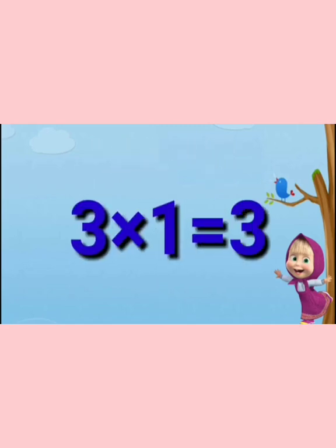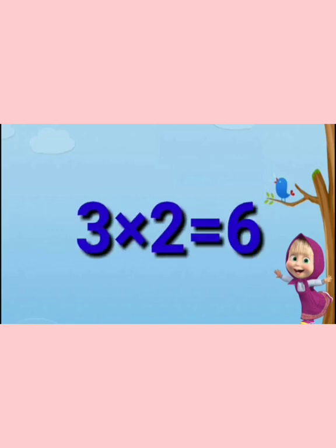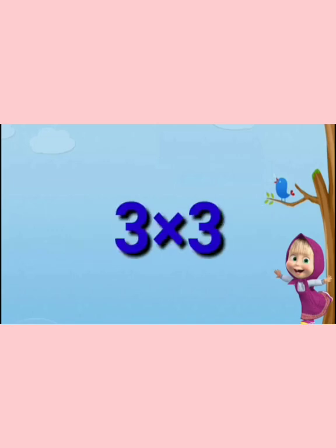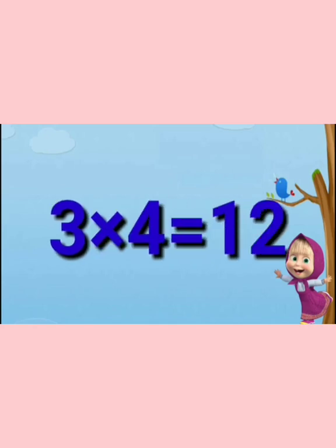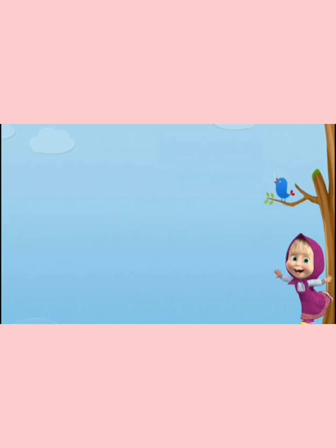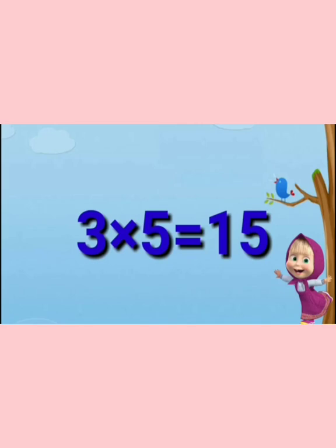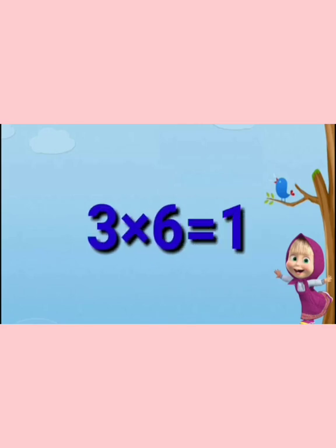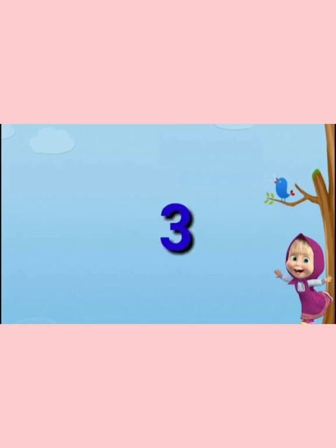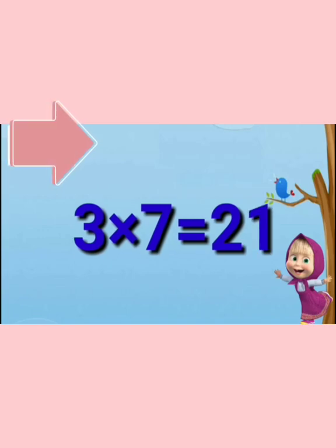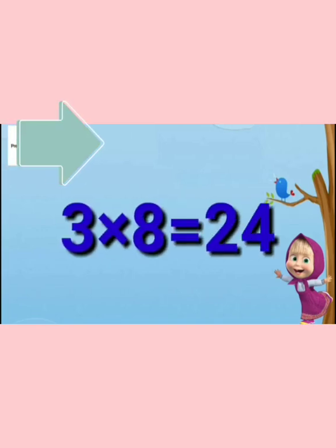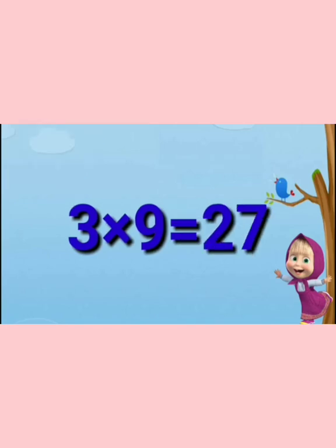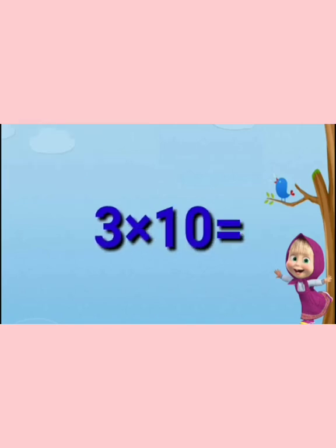Table of 3: 3 ones are 3, 3 twos are 6, 3 threes are 9, 3 fours are 12, 3 fives are 15, 3 sixes are 18, 3 sevens are 21, 3 eights are 24, 3 nines are 27, 3 tens are 30.